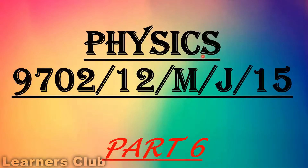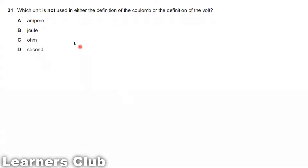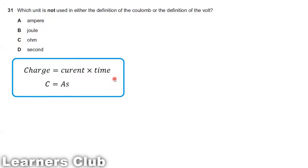Part 6, May June 2015, paper 12, Question 31: Which unit is not used in either the definition of the coulomb or the definition of volt? Coulomb is the SI unit of charge, and charge is equal to current multiplied by time. Current is in ampere and time is in second. So option A (ampere) and option D (second) are used to define coulomb.